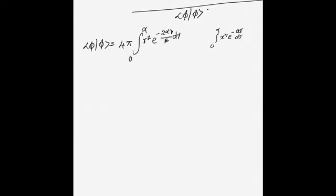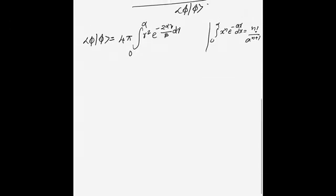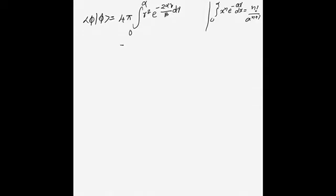I will use the standard integral: ∫₀^∞ xⁿ e^(−ax) dx = n! / a^(n+1). For ⟨φ|φ⟩, we have n = 2 (from r²) and a = 2α/β. Applying this gives 4π · β³/(2α³), which simplifies to πβ³/α³, confirming the wave function is not normalized.